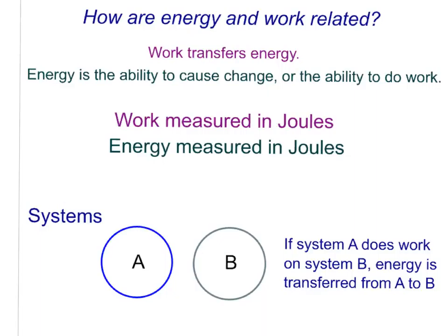Let's say system A is the bat in our baseball example and system B is the ball. If system A does work on system B, energy is transferred from A to B. In other words, if our bat does work on the ball, energy is transferred from the bat to the ball.